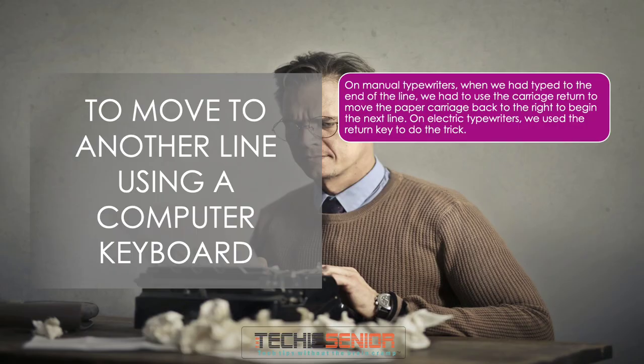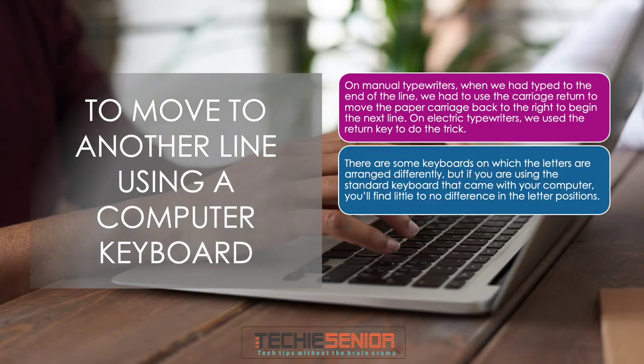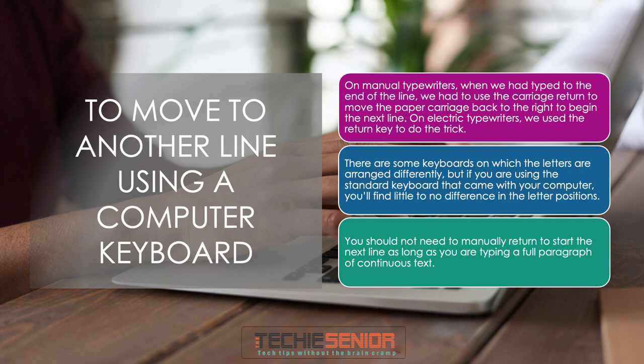On manual typewriters, when we had typed to the end of the line, we had to use the carriage return to move the paper carriage back to begin the next line. On electric typewriters, we use the Return key to do the trick. You should not need to manually return to start the next line as long as you are typing a full paragraph of continuous text.